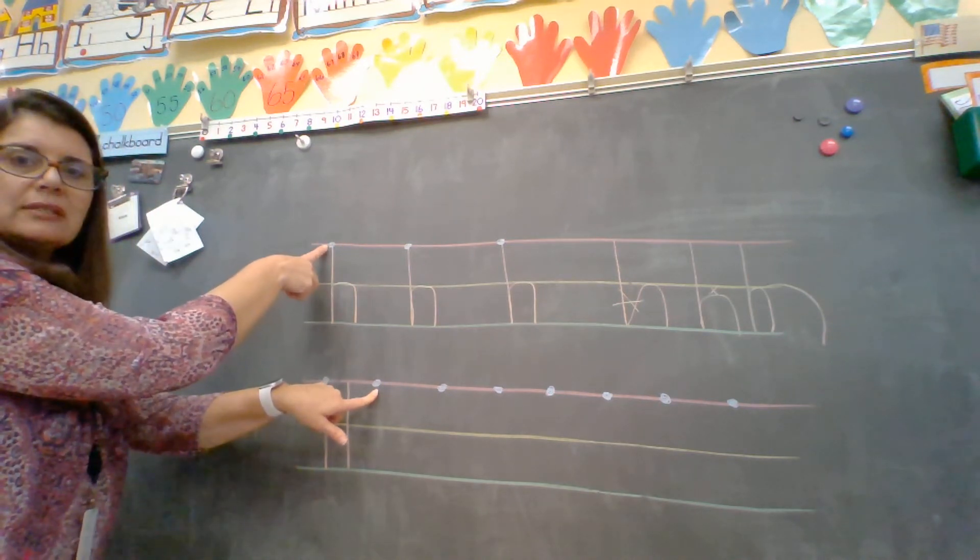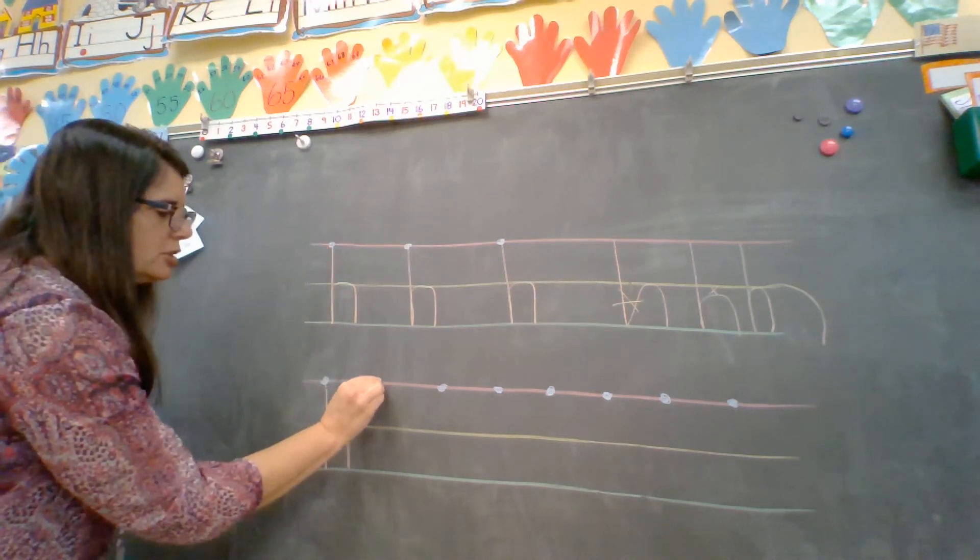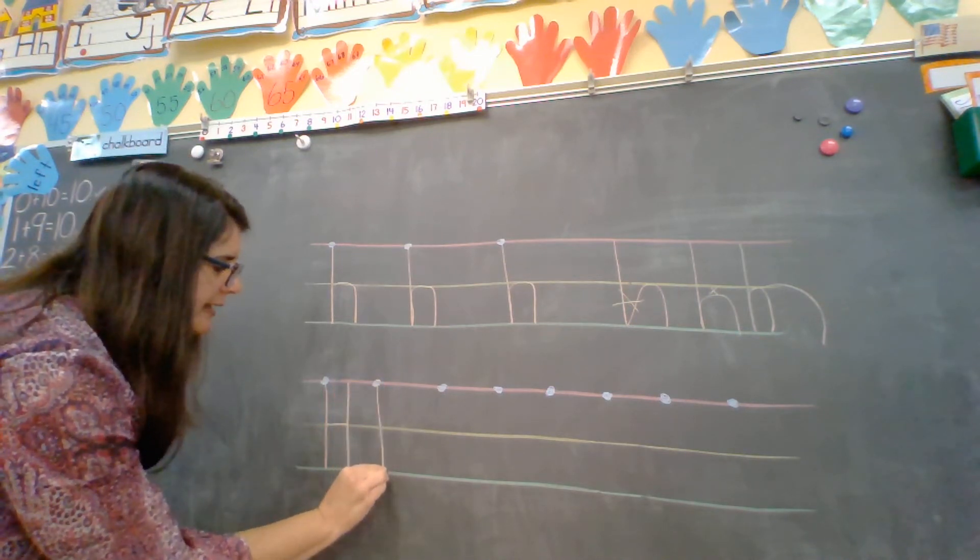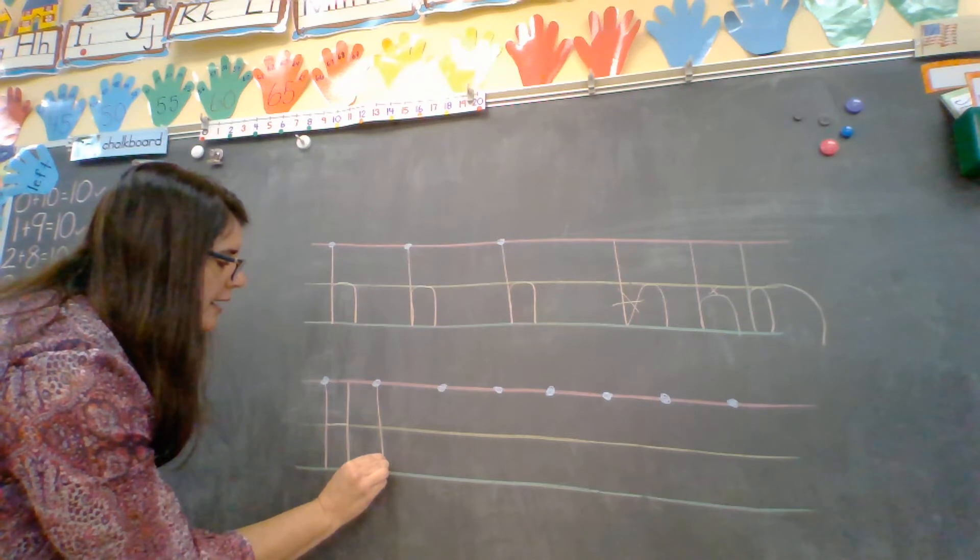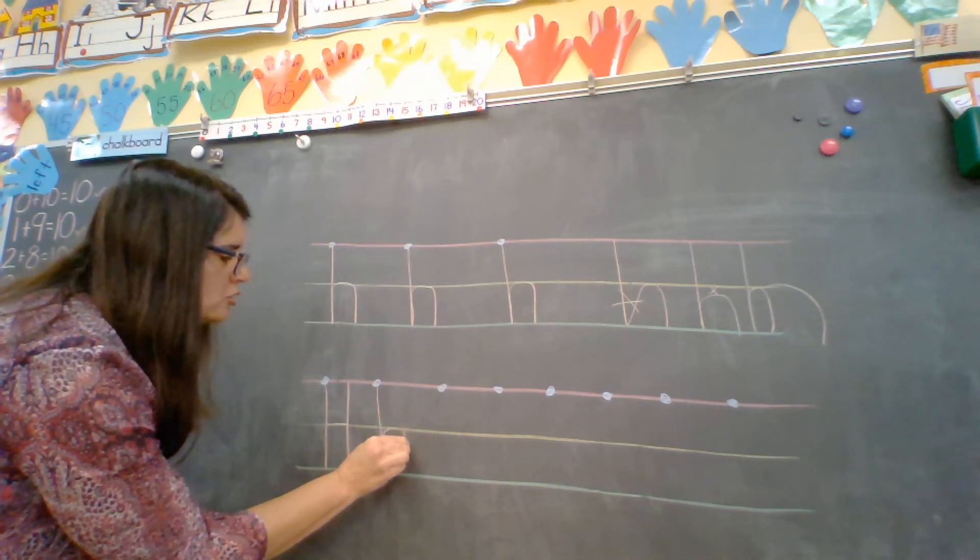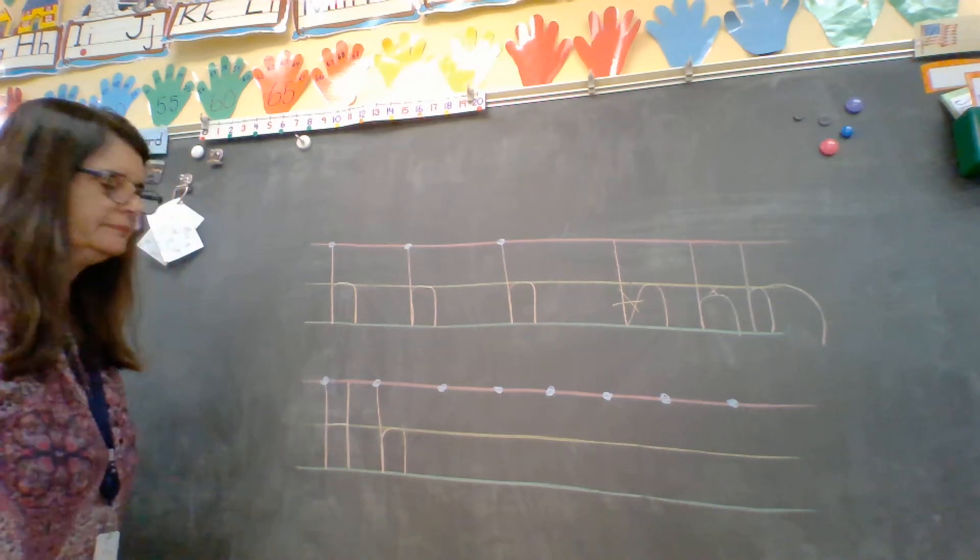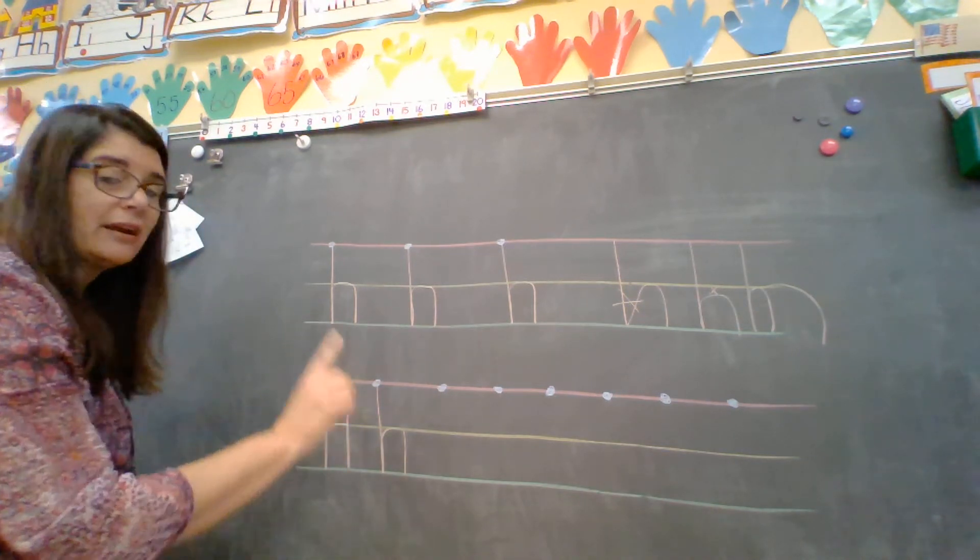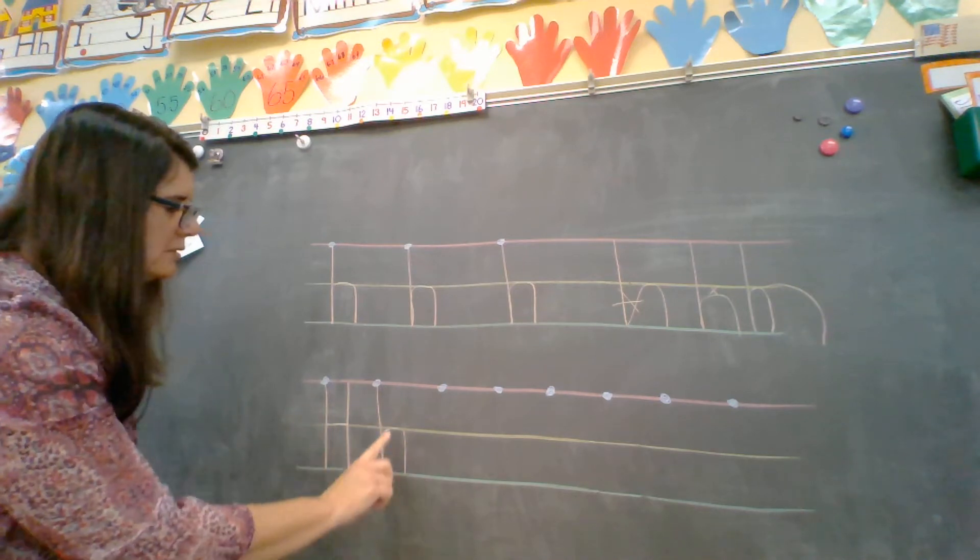Remember lowercase h starts up here. So you're going to start on the dot for lowercase h. Straight down to green. Go right back up on the same line. Curve across the yellow. Straight down to green. Capital lowercase. Then you're going to do it again. You've got to remember the pattern. Capital lowercase.